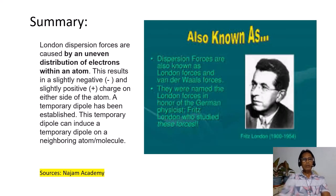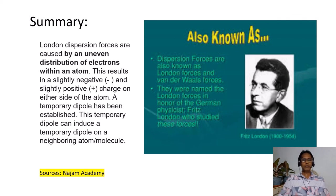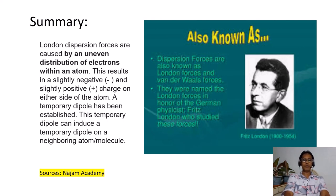London dispersion forces are caused by an uneven distribution of electrons within an atom, resulting in a slightly negative and slightly positive charge on either side of the atom — a temporary dipole has been established. This temporary dipole can induce a temporary dipole on a neighboring atom or molecule. These London dispersion forces were named after the German physicist Fritz London, who studied these forces.